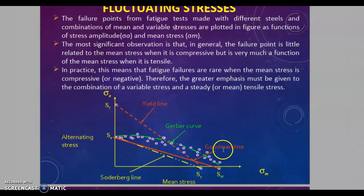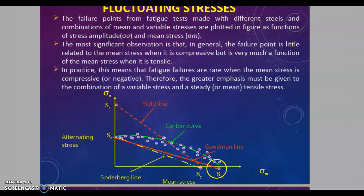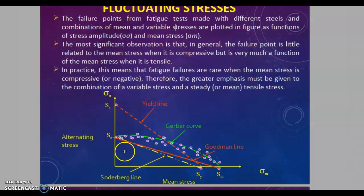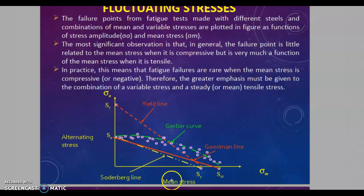This is the Goodman line — the red straight line connecting AC on the alternating stress axis and SUT on the mean stress axis. The area below this straight line is safe. If the values of alternating stress and mean stress fall under this area, the specimen will be safe.